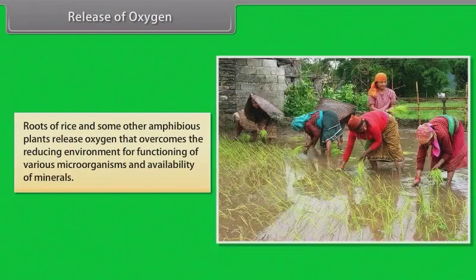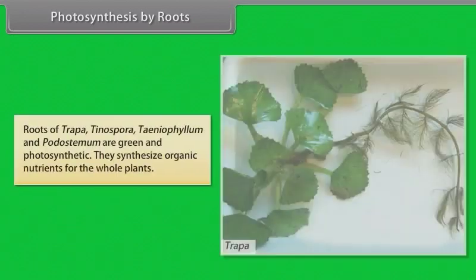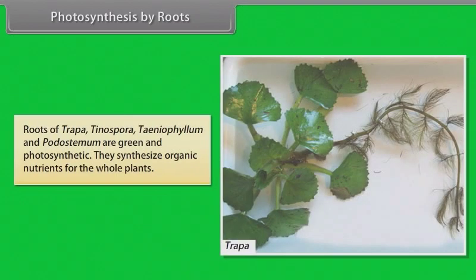Release of oxygen: Roots of rice and some other amphibious plants release oxygen that overcomes the reducing environment for functioning of various microorganisms and availability of minerals. Photosynthesis by roots: Roots of Trapa, Tinospora, Taeniophyllum, and Podostemum are green and photosynthetic; they synthesize organic nutrients for the whole plant.